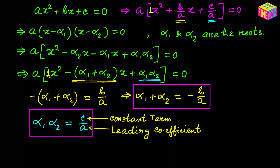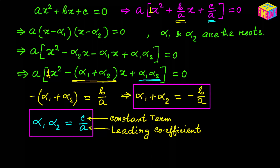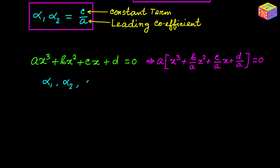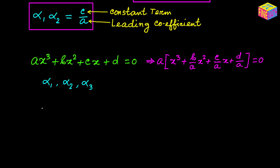Now let's take a cubic equation and see how this works. Let's suppose we have a cubic equation, and if we take a as a common factor out it looks like this. Now if we assume that the three roots of this cubic equation are alpha sub 1, alpha sub 2, and alpha sub 3, can we rewrite this equation in factor form? Now we are going to multiply the three factors together and see what happens.